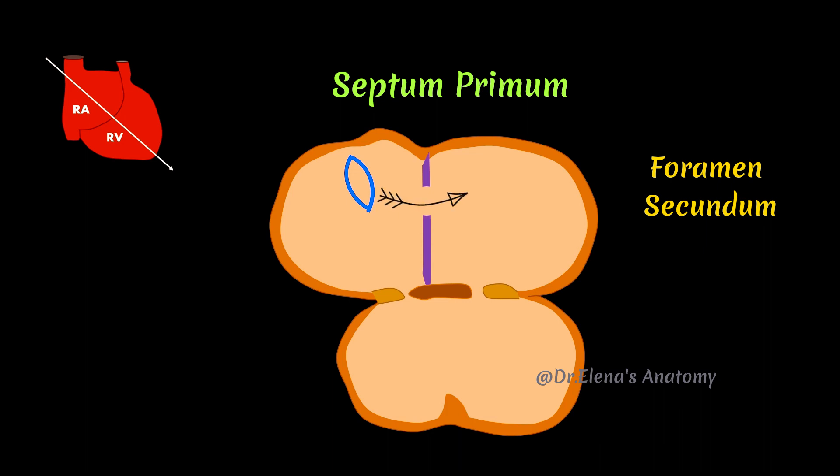This allows the communication of blood between right and left atrium to transfer oxygenated blood from inferior vena cava to the left atrium.